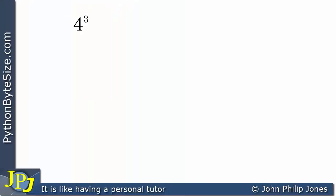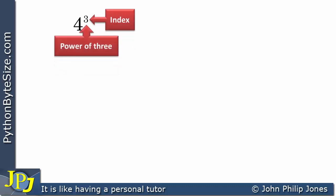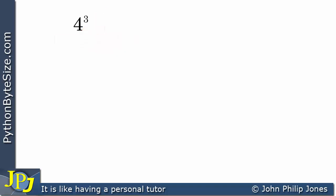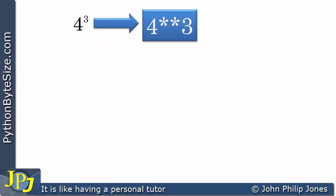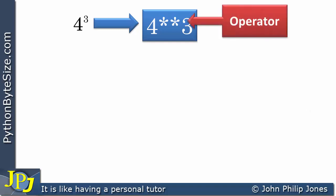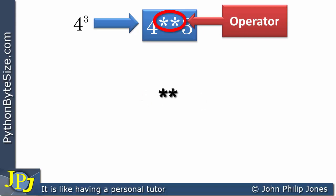To emphasize the operator further, here is 4 raised to the power of 3. The index is 3, so this is 4 cubed. In Python, we use the same operator — two asterisks — to express 4 to the power of 3. This is an additional operator beyond the four arithmetic operators (addition, subtraction, multiplication, division) covered previously, and it is built into Python.